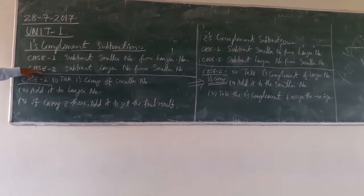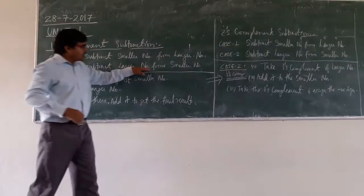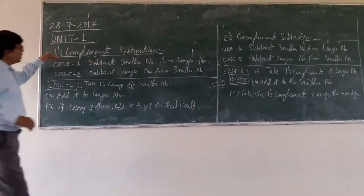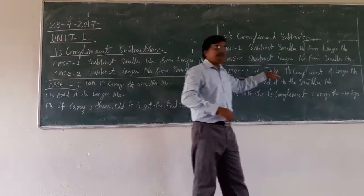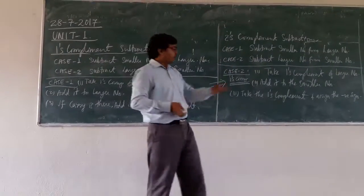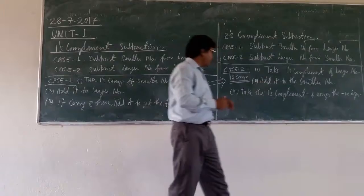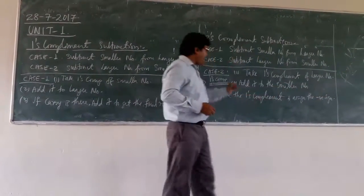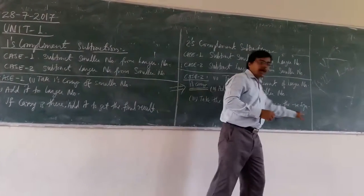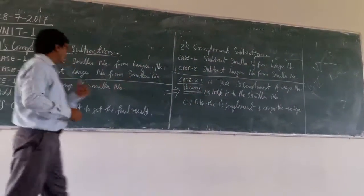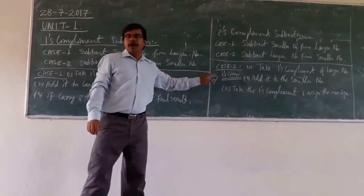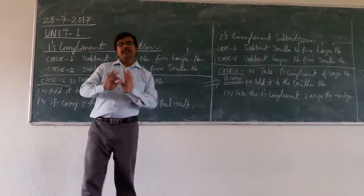We can also have Case 2, where we subtract the larger number from the smaller number. Here we use the 1's complement. First, from the two numbers, identify the larger number and take its 1's complement. Then add it to the smaller number. After adding, take the 1's complement of that result and assign a negative sign. Always remember: when subtracting the larger number from the smaller number, we assign a negative sign. When subtracting the smaller number from the larger number, there is no negative sign.